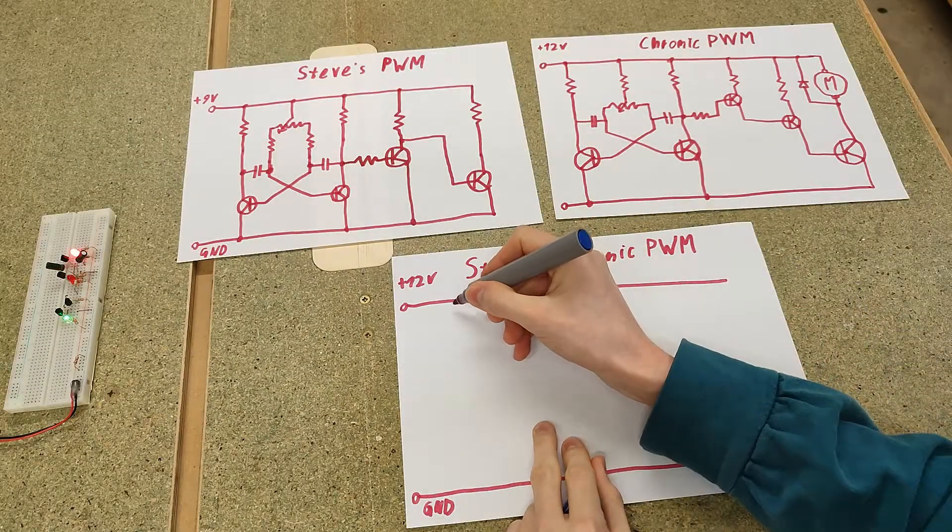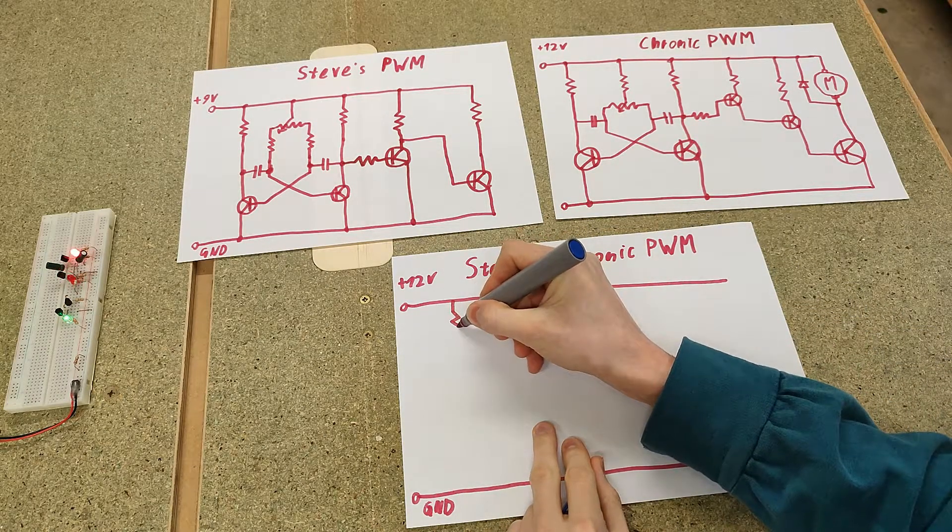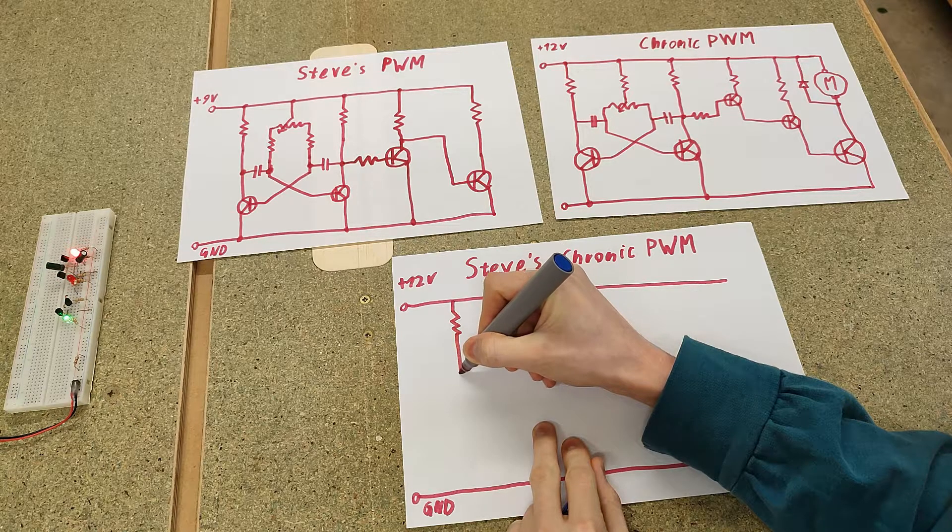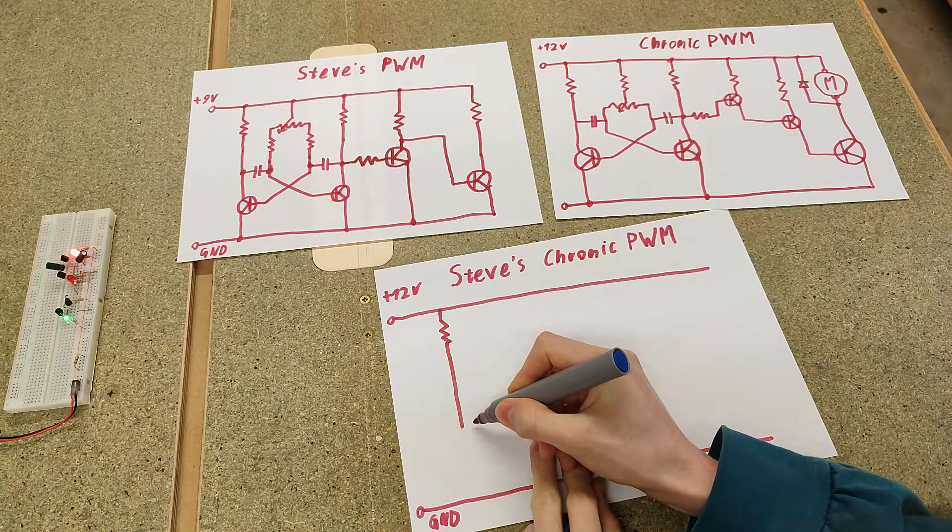We're going to start off with the standard A-stable multivibrator shell, just a couple of resistors and transistors loosely strewn about.